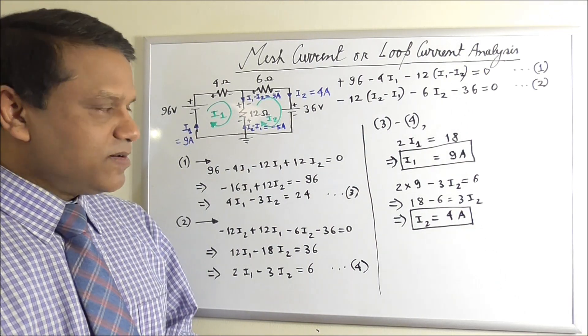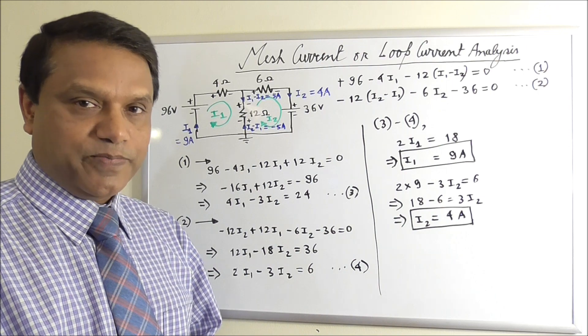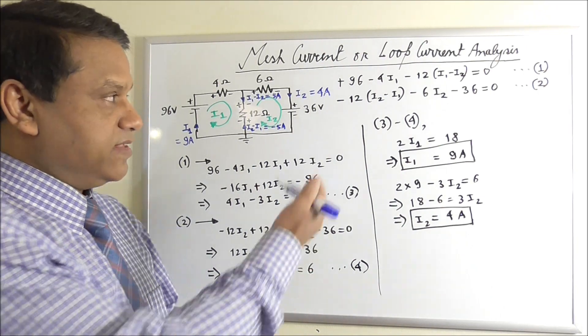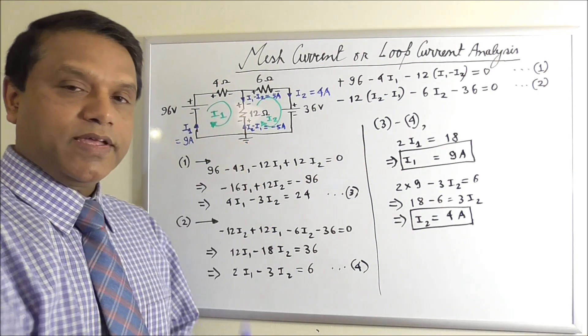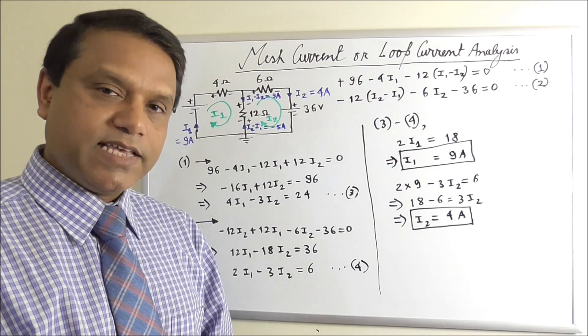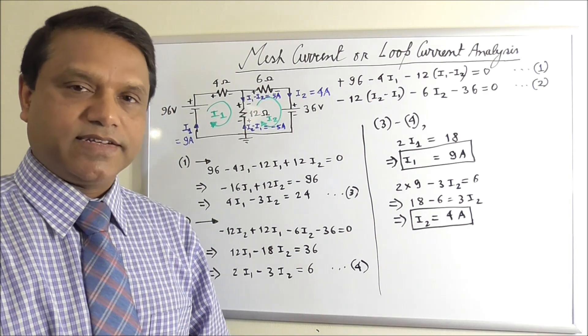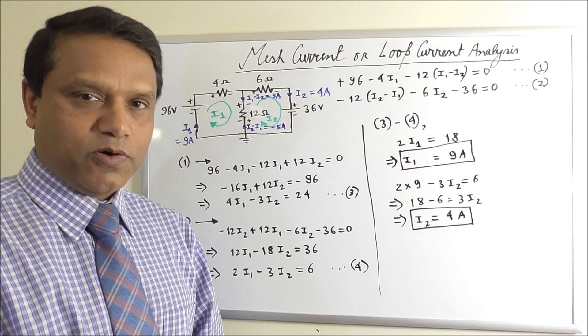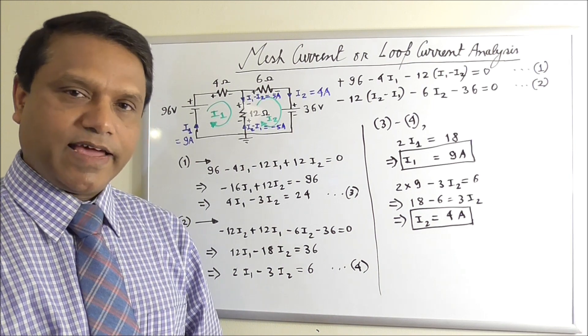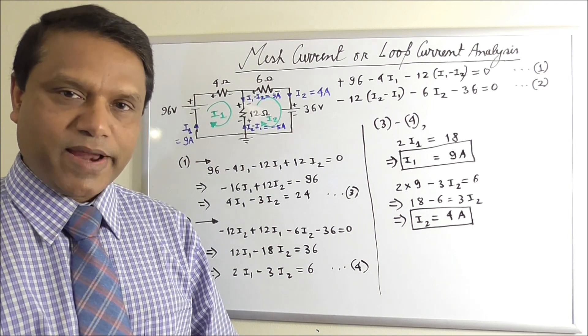And it gives us quicker solution. And we have to also remember we have only used KVL here. The KCL was not applied in this case because when you assume the loop currents, the KCL was implicitly used in that assumption. I hope you learned this technique and you will learn more by doing more practice.